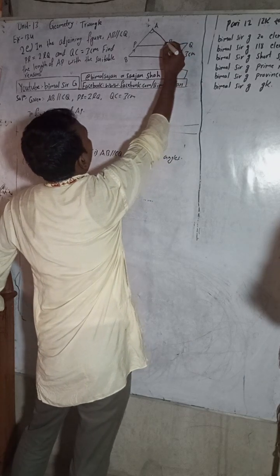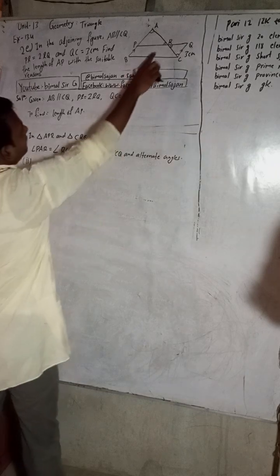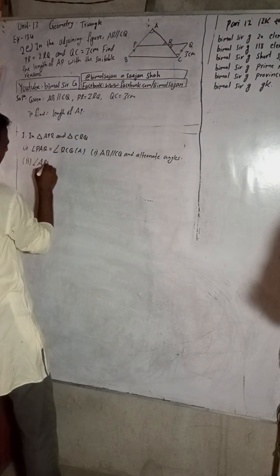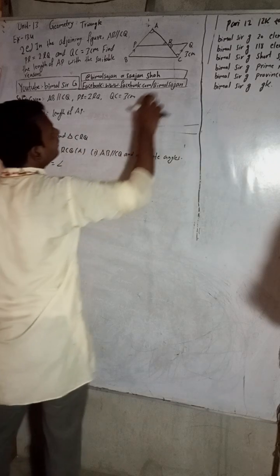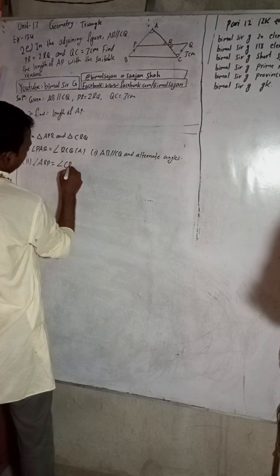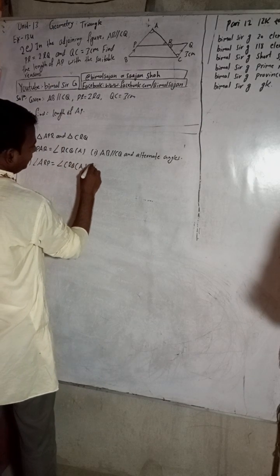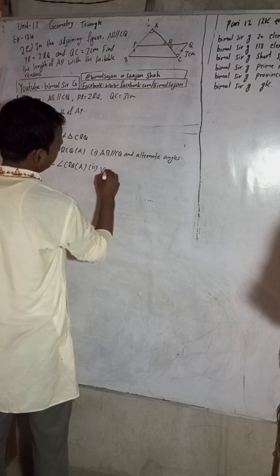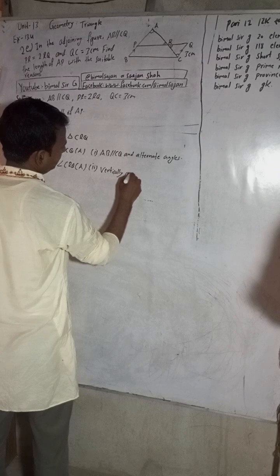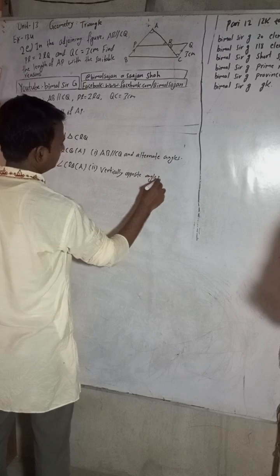And this angle ARP is equal to angle CRQ because these are vertically opposite angles.